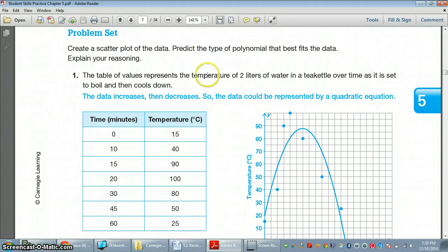Then we're going to use that scatter plot to predict the type of polynomial. What we mean by type of polynomial, we mean, is it quadratic, like a parabola, such as this one?